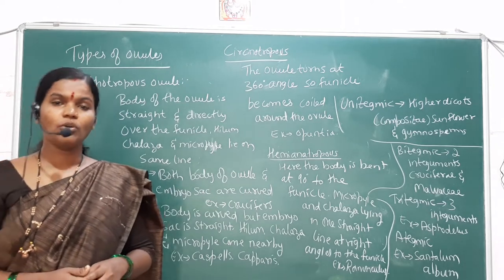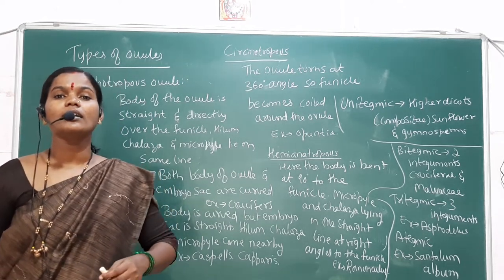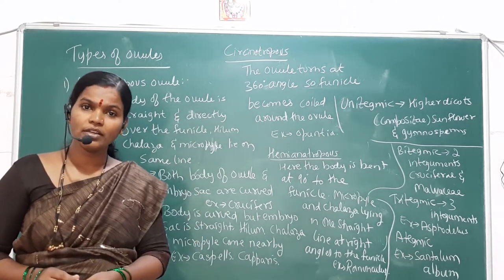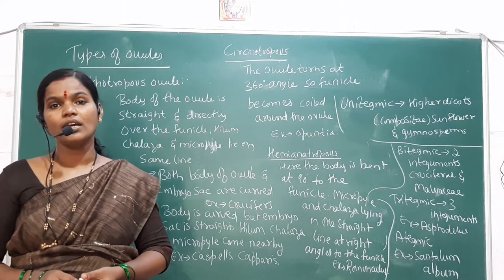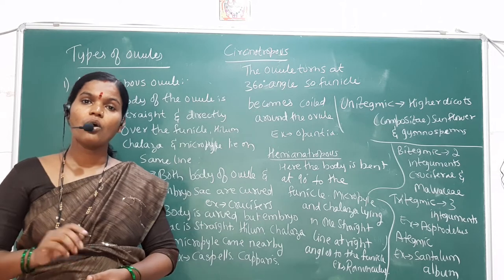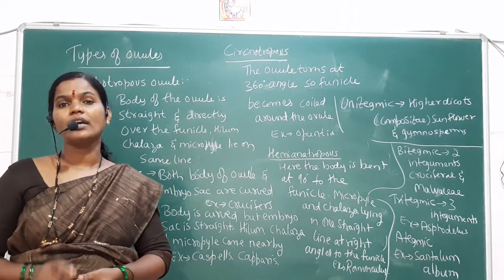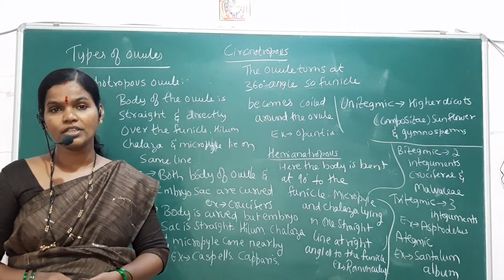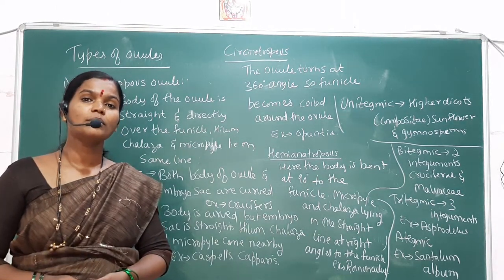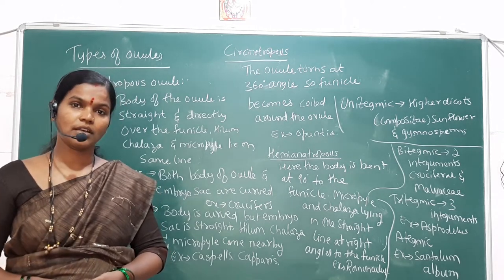The chalaza is the base of the ovule. The micropyle is the opening of the ovule produced by the integuments — the mouth of the ovule. The nucellus is a diploid sporophytic tissue that provides nutrition to the developing embryo sac.